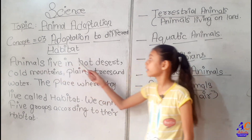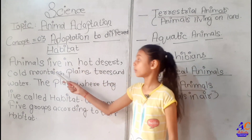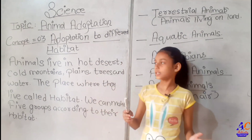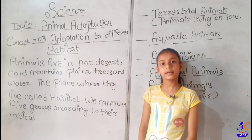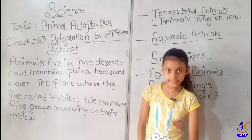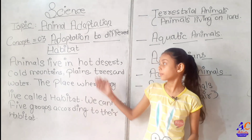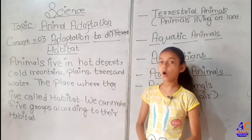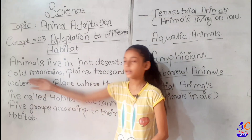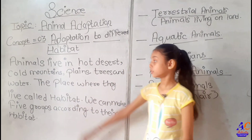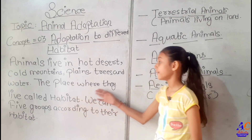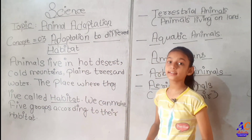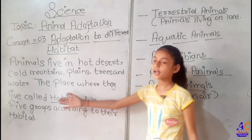Animals live in different places: hot deserts, cold mountains, plains, trees, and water. Some animals live in hot deserts, some in cold mountains, some in plains areas, some in trees, and some in water. The place where they live is called their habitat.